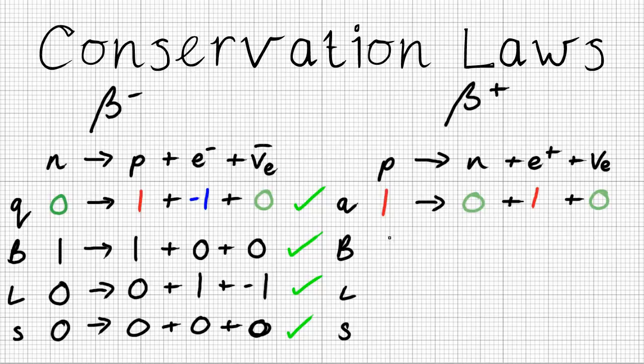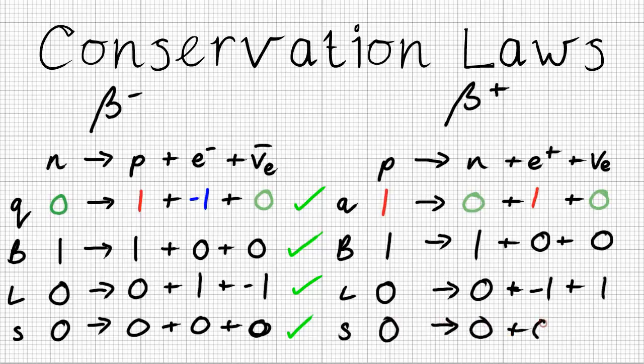Baryon number, proton is a baryon, neutron is a baryon, positron is not, electron neutrino is not. Lepton number, proton is not a lepton, neutron is not a lepton, positron is an anti-lepton, so it's minus one. Electron neutrino is a lepton. Yep, that's conserved as well. Zero is equal to zero. Once more with the strangeness, we've got no strangers at all. So, once more, we have a viable reaction.